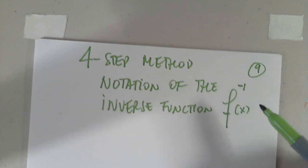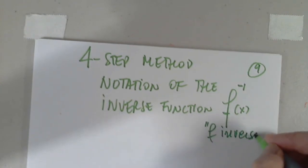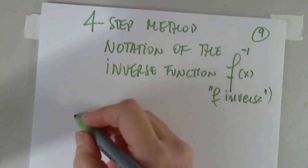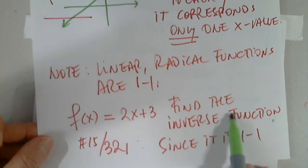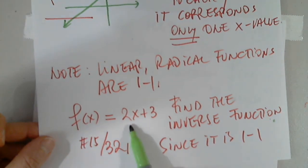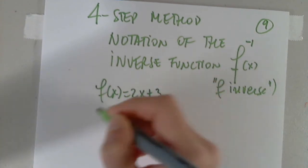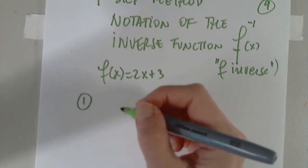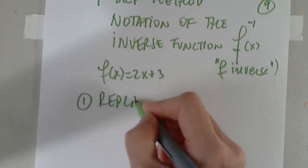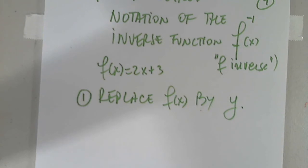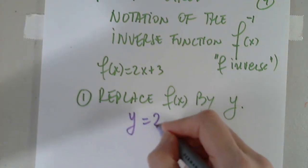Notation of the inverse function is not f raised to negative 1, but it's just called f inverse. That's how we read it, f inverse. So we picked problem 15 on page 321. We're asked to find the inverse function since it is 1 to 1, and here's our function. So I'm going to copy 2x plus 3 here. Step number 1, replace f(x) by y. I can always do that. f(x) and y mean the same thing. So that's y equals 2x plus 3.